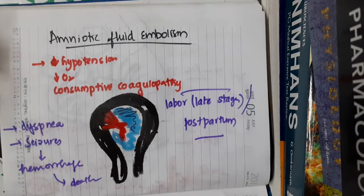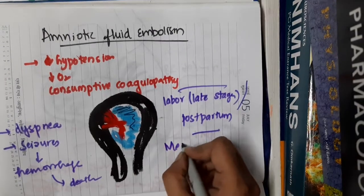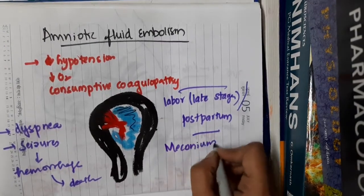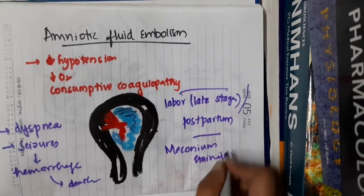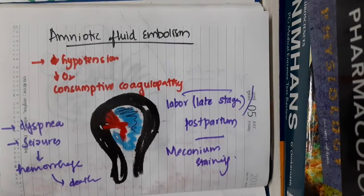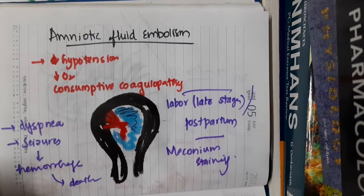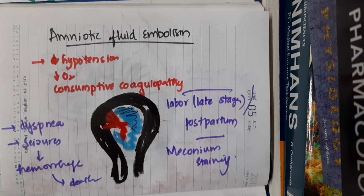Amniotic fluid embolism can result in meconium staining. Because of this embolism, the mother is in distress and the fetus is in distress. Whenever the fetus is in distress, meconium is released. So meconium staining and rapid labor can occur due to amniotic fluid embolism.